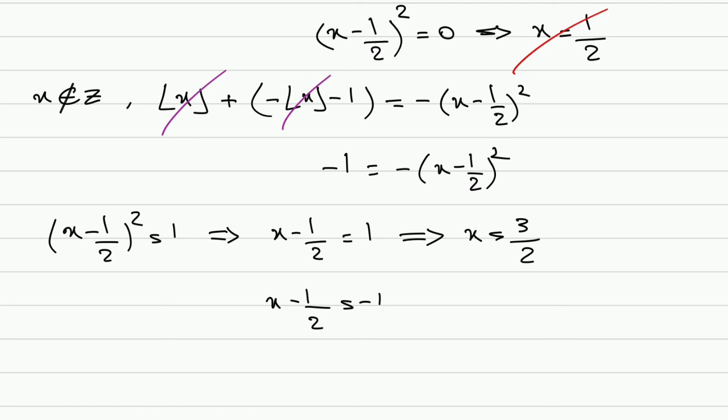3/2, and this is the second one: x is -1/2. Both of them are acceptable because they're not integers. Now this is the end of this video. See you guys in the next one. Until then, take care, goodbye.